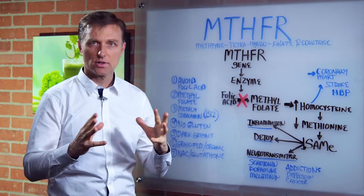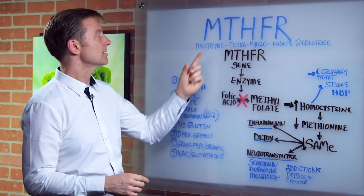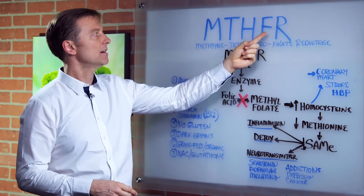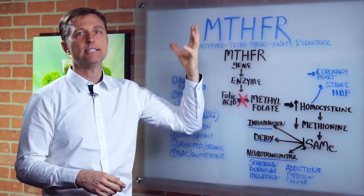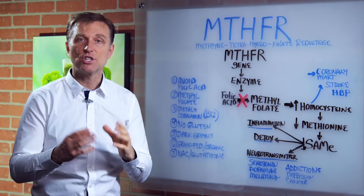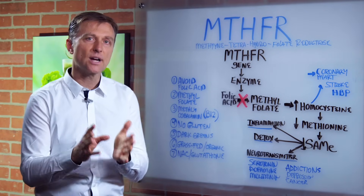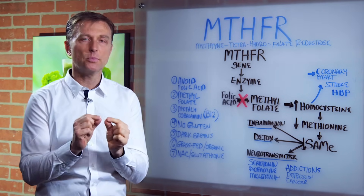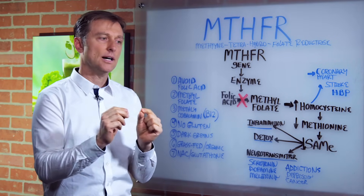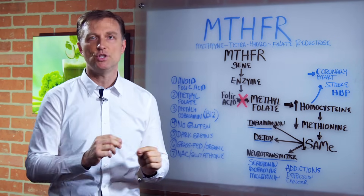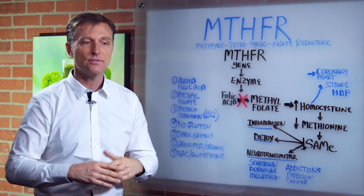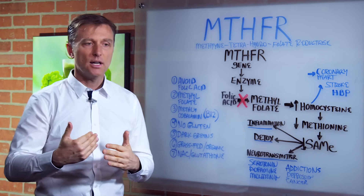I don't know if you saw this floating around the internet — it's this thing called MTHFR. It's a defect in this gene. Genes are mini instructions. They're like the blueprints to tell cells what to do or what to make. And you have this whole chain reaction in the cell.